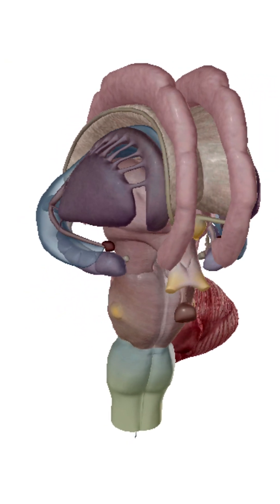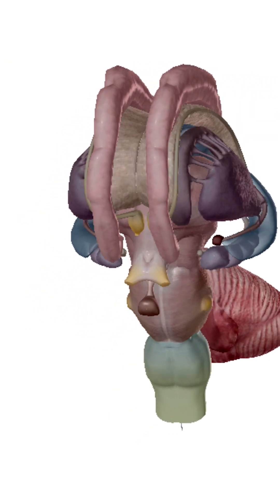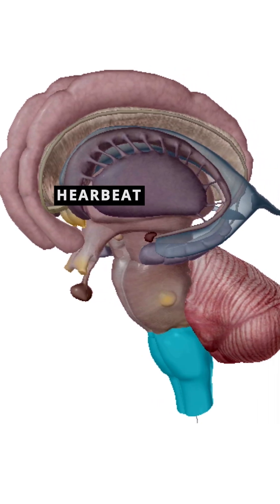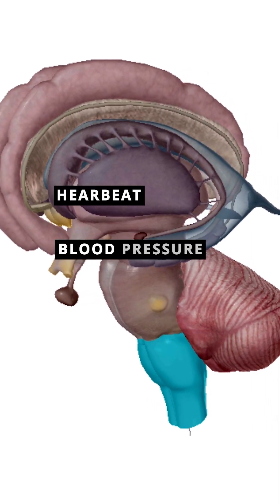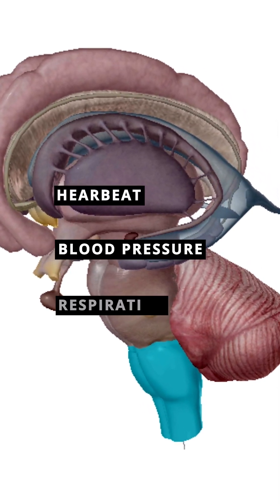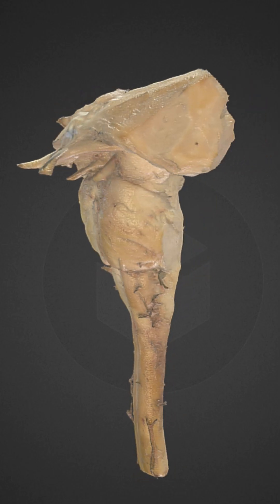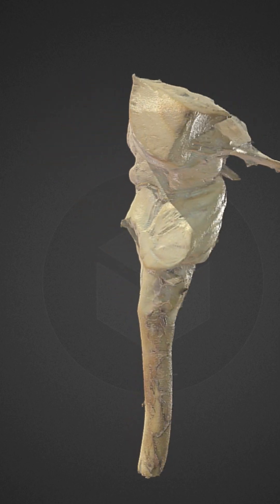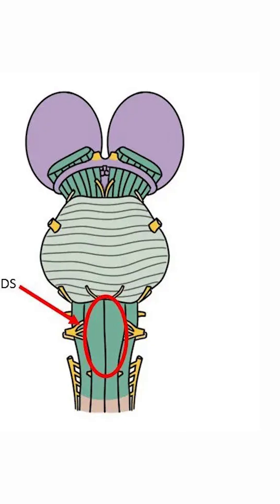The medulla oblongata regulates several vital and involuntary functions, such as heartbeat, blood pressure, and respiration. Any significant damage to this region can be life-threatening.